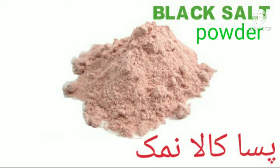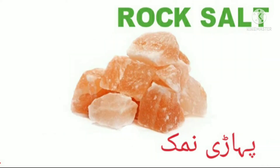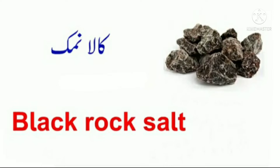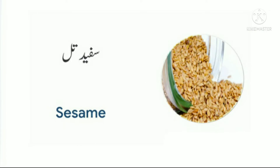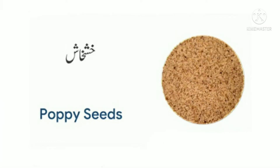Number twenty five: black salt powder, pisa kala namak. Number twenty six: rock salt, pahadi namak. Number twenty seven: black rock salt, kala namak. Number twenty eight: sesame, safed til. Number twenty nine: poppy seeds, khus khus.